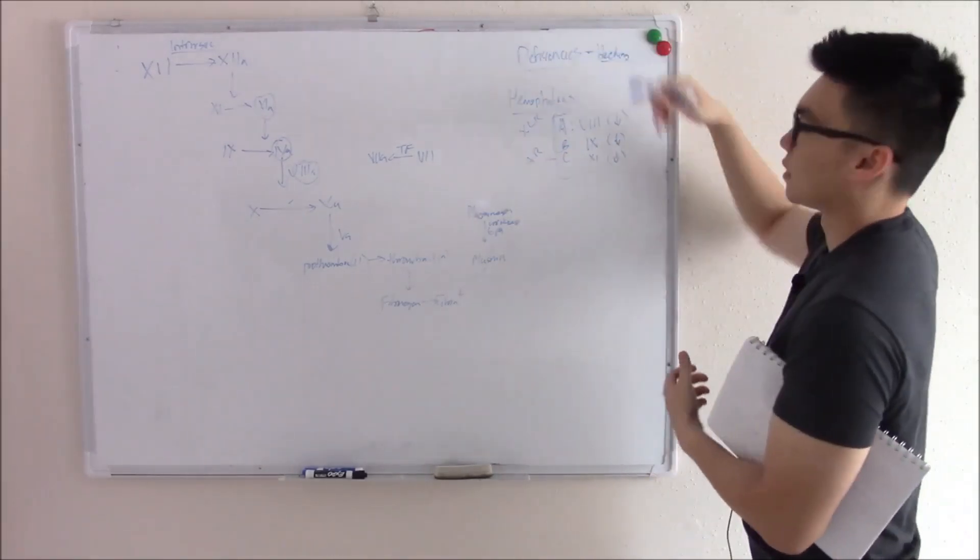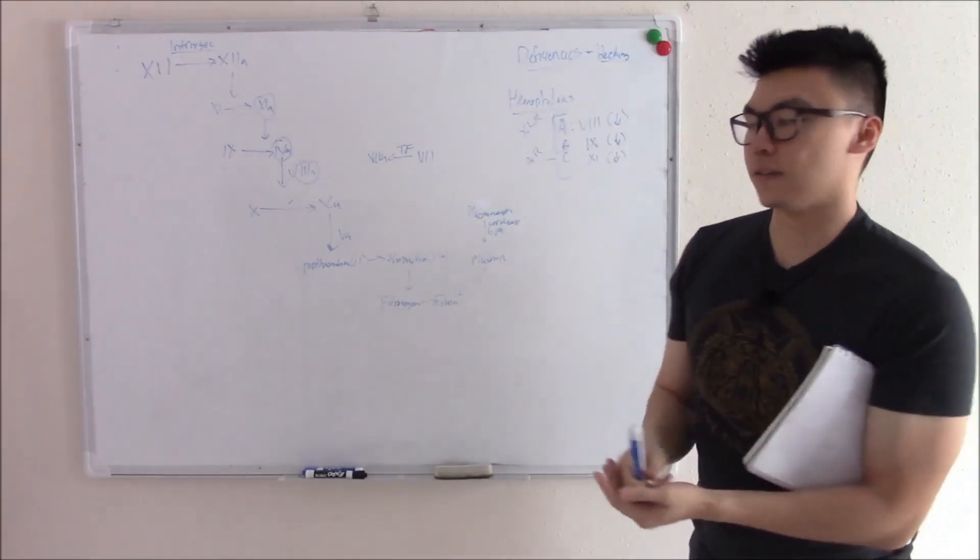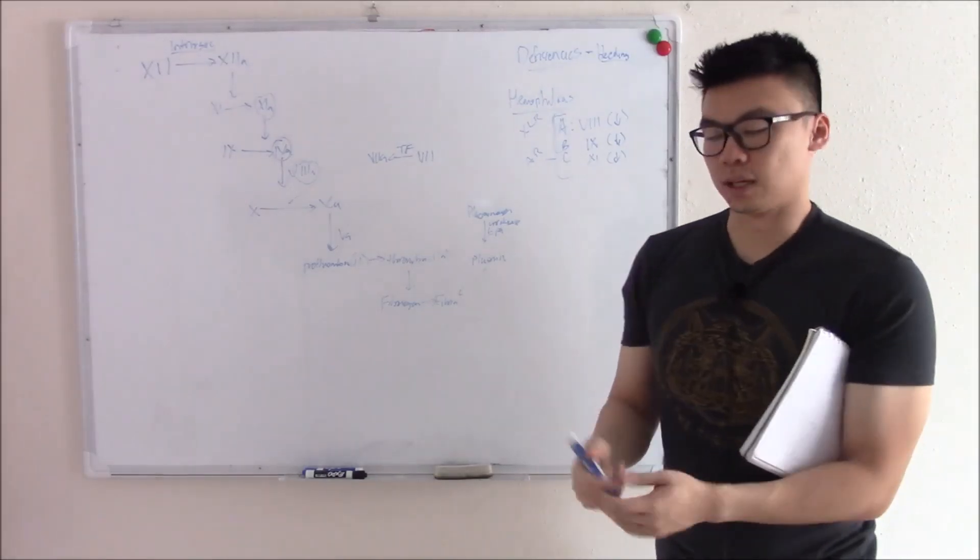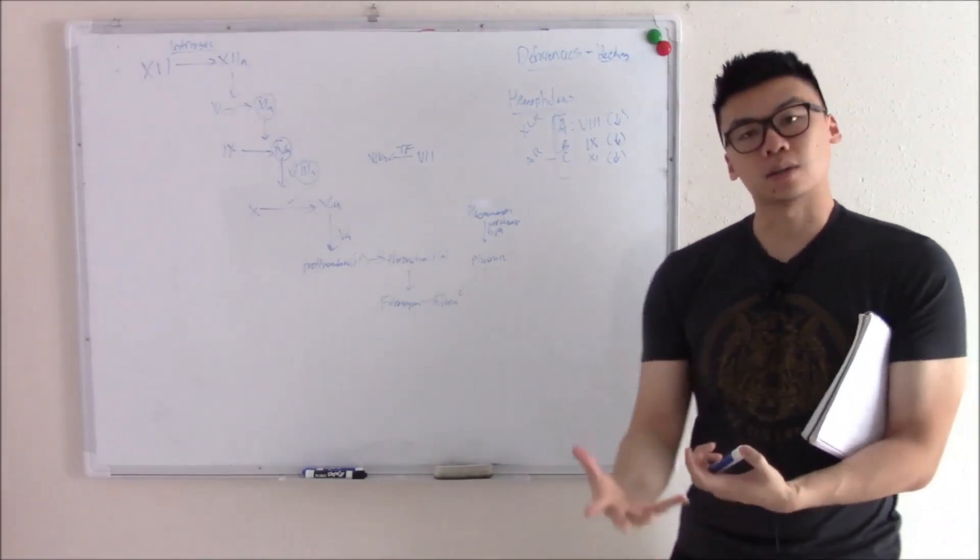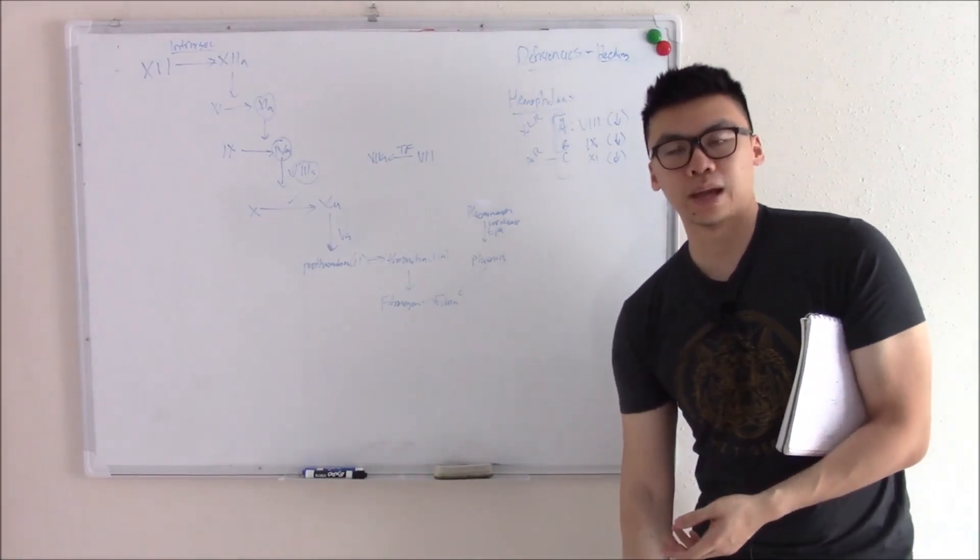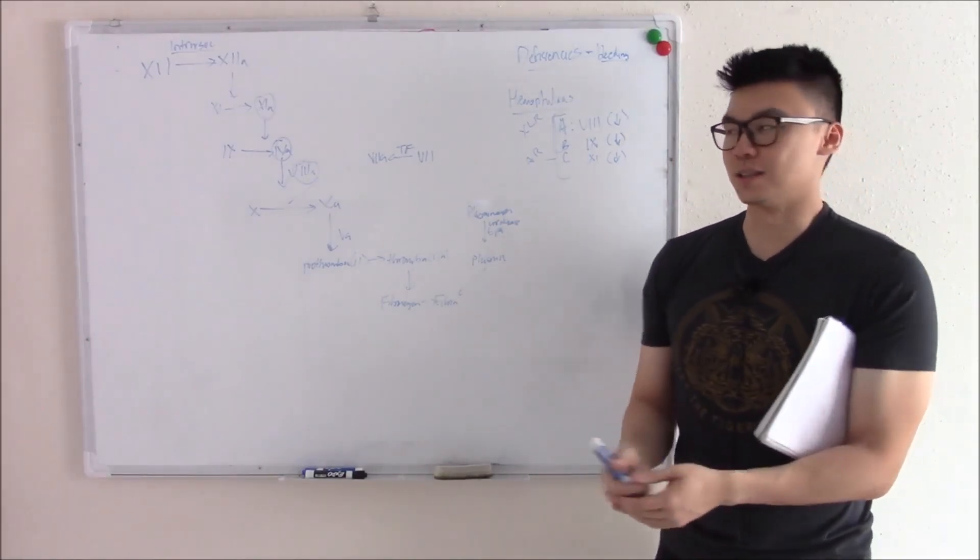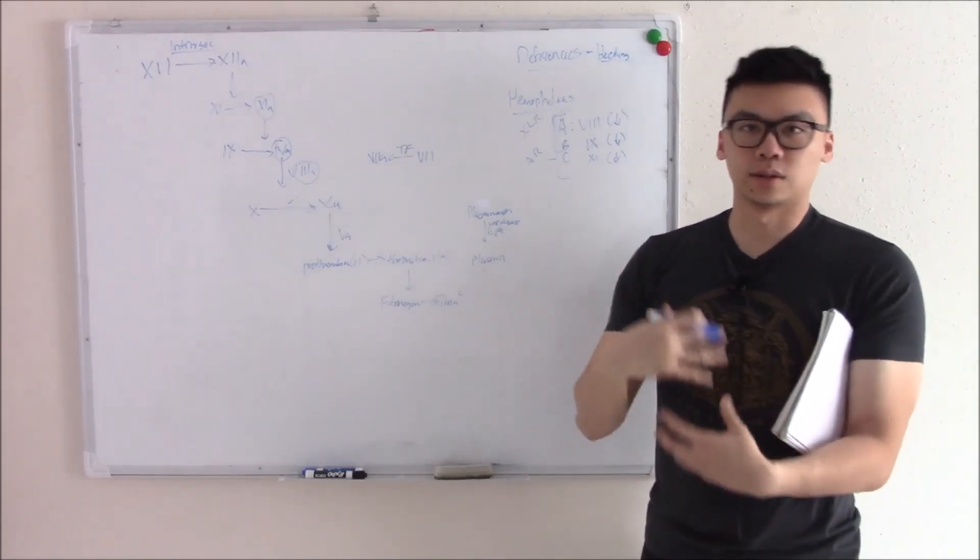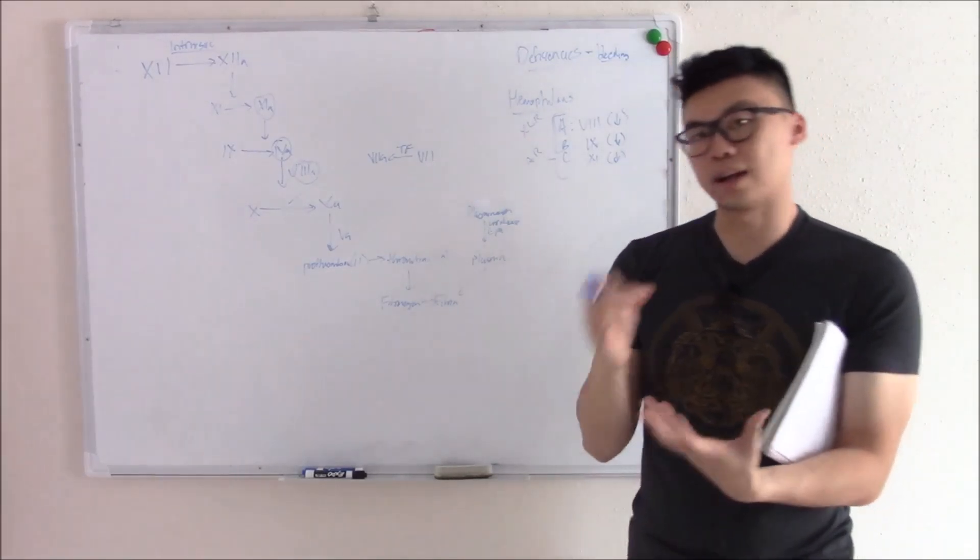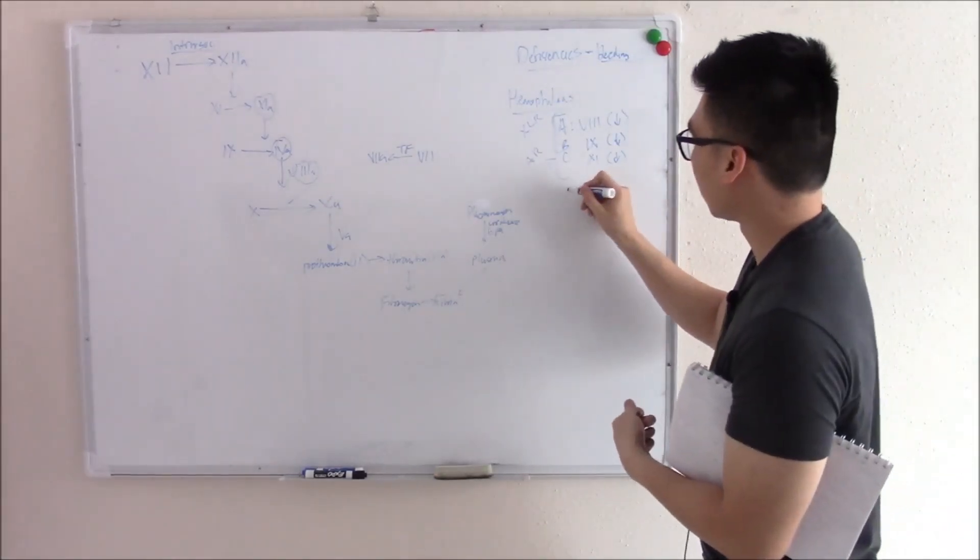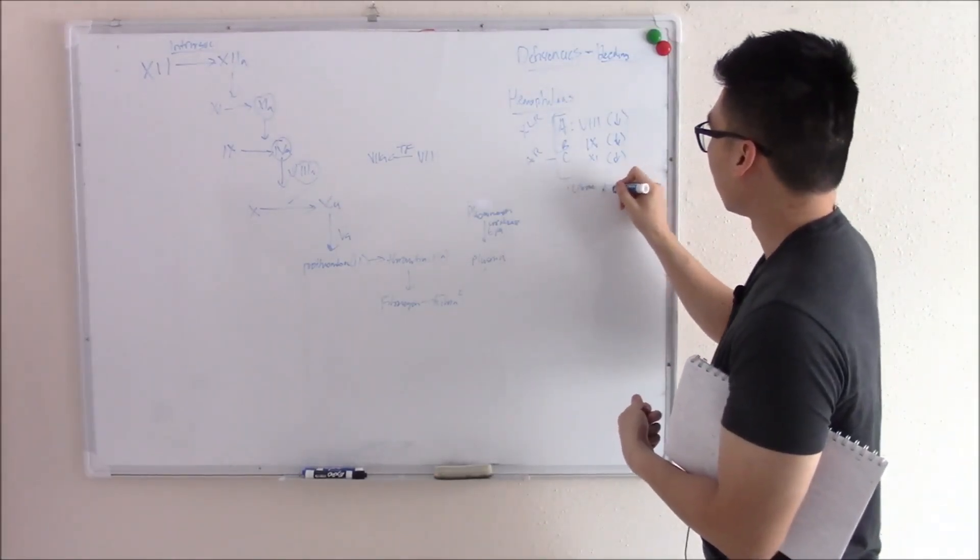They all share something in common. However, they're all problems with secondary hemostasis. So you're going to have signs of that deep, late bleeding. And if you have chronic deep, late bleeding, then one of the complications you can develop is painful joints. Blood isn't very good in your joints. Blood proteases can destroy cartilage, you get chronic inflammation, you get iron deposition. So you can get chronic joint pain.